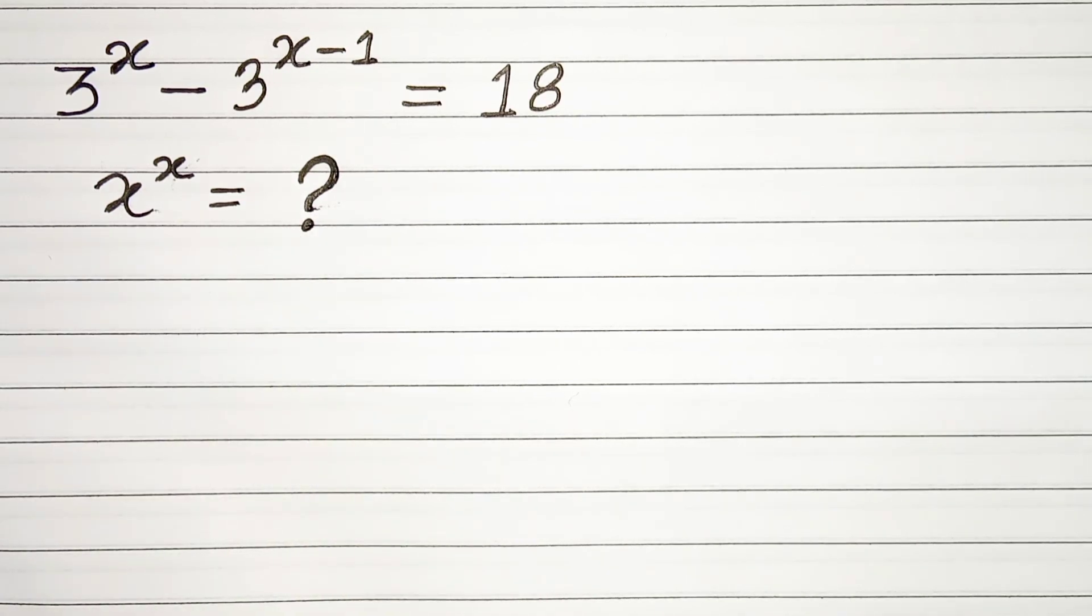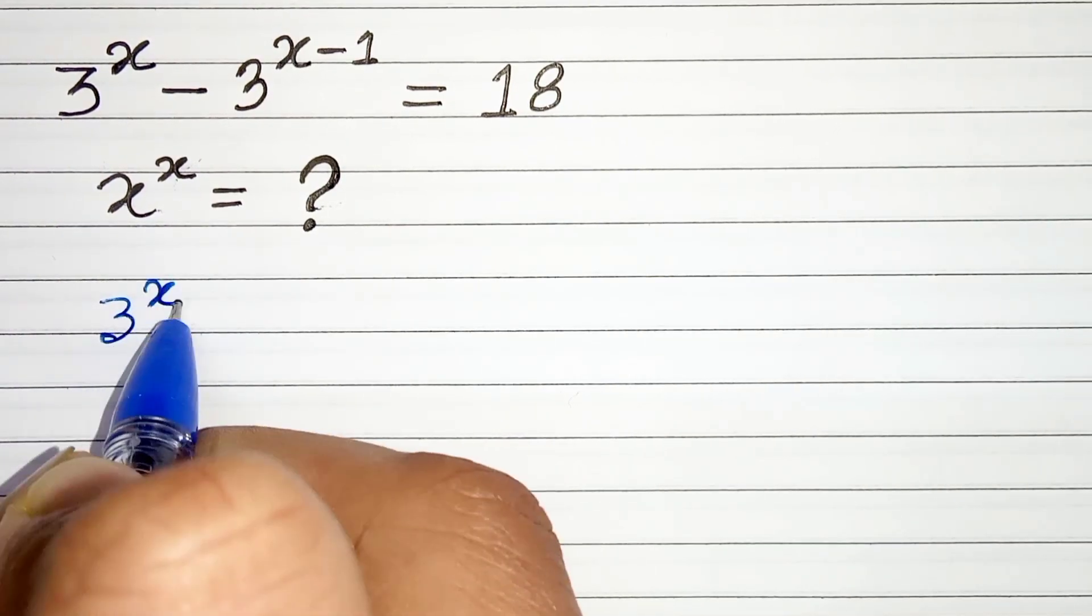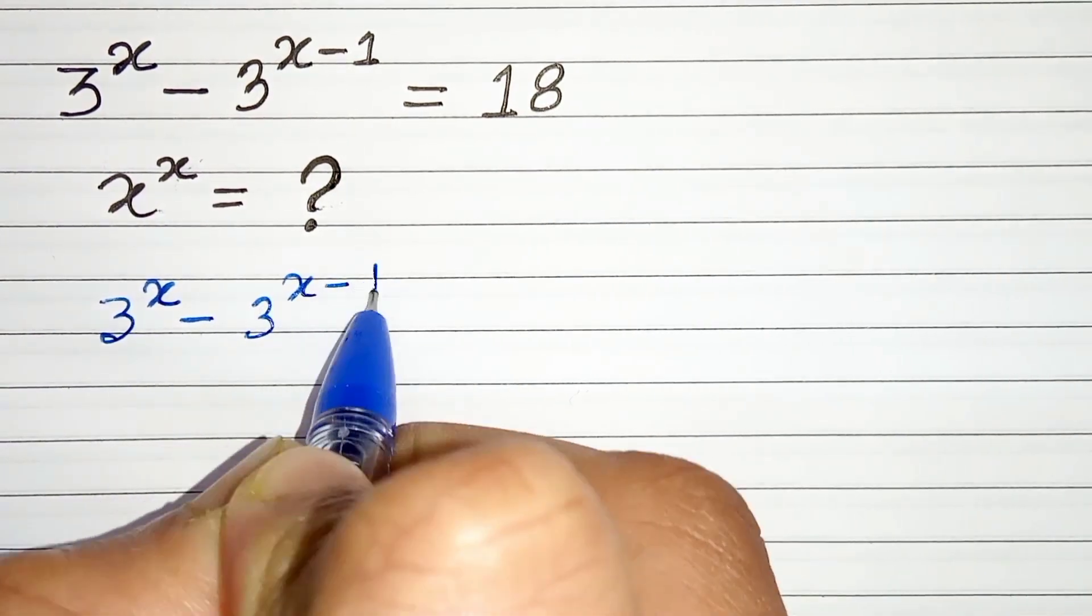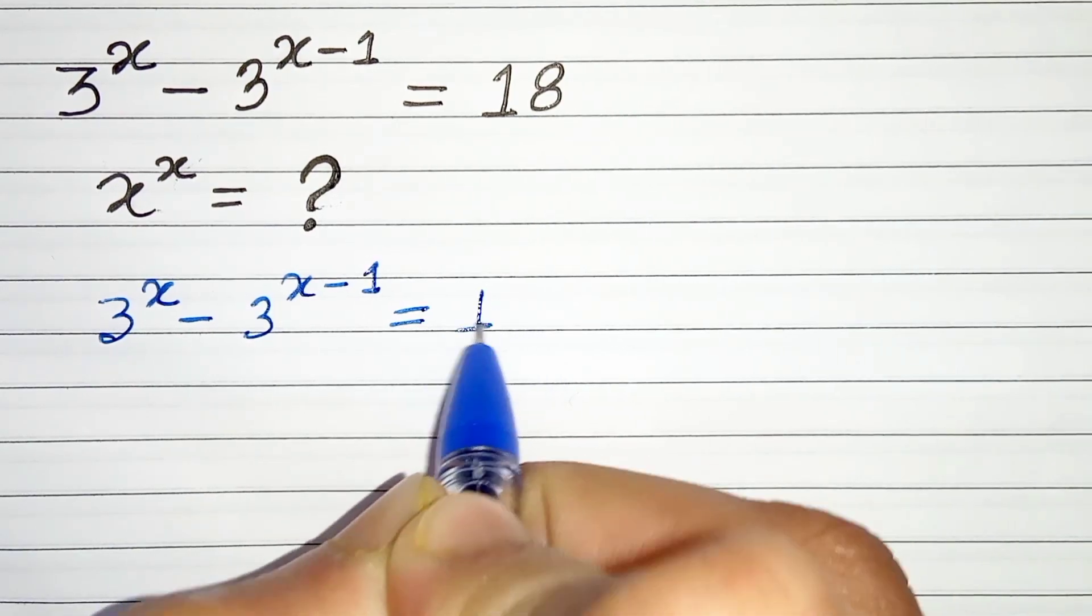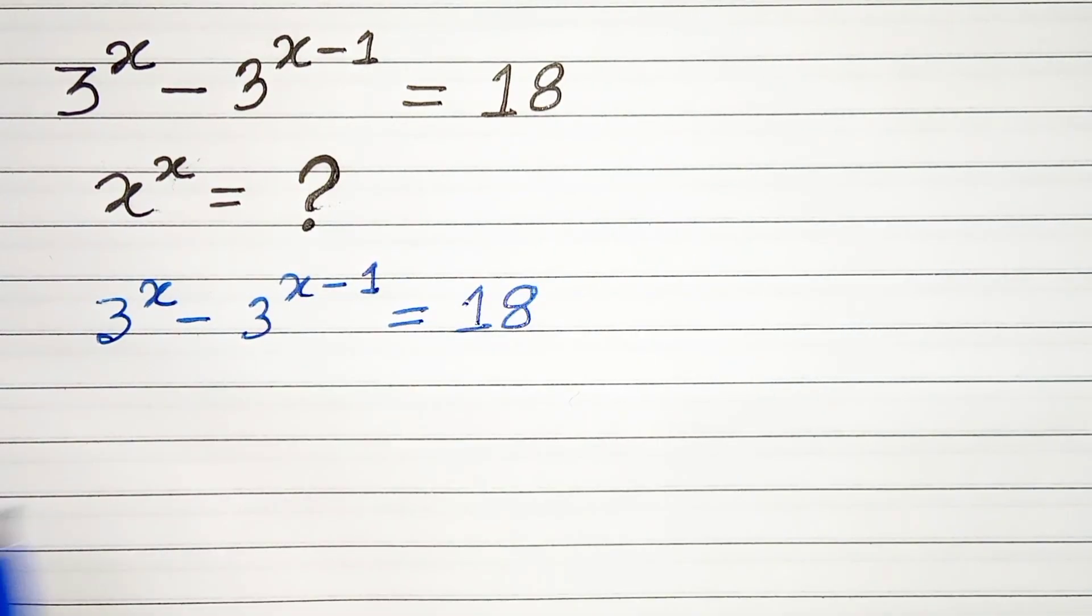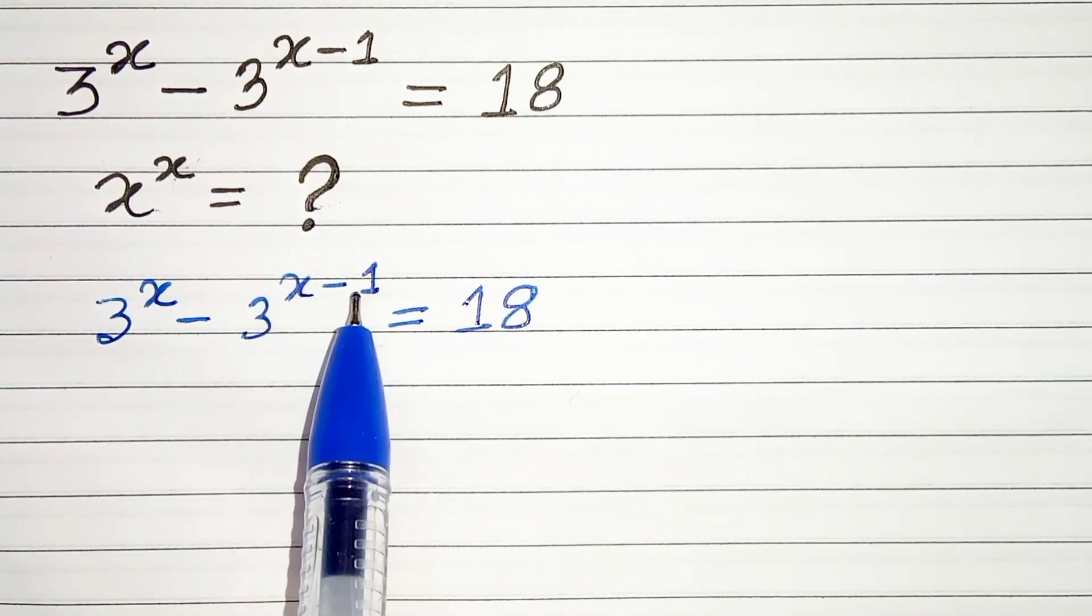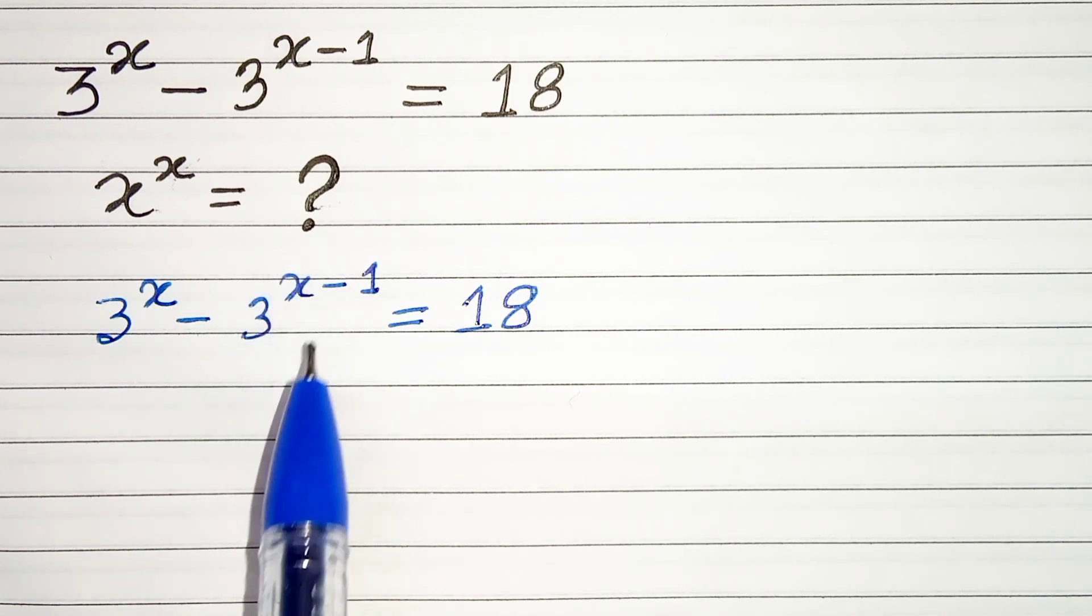We are given 3 to the power x minus 3 to the power x minus 1 equals 18. Now in the next step we can write 3 to the power x minus 1 as 3 to the power x divided by 3.